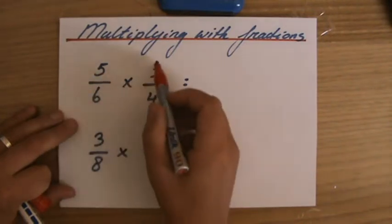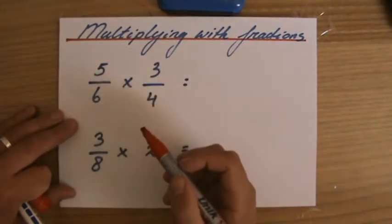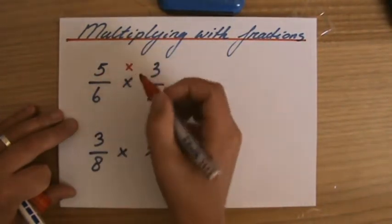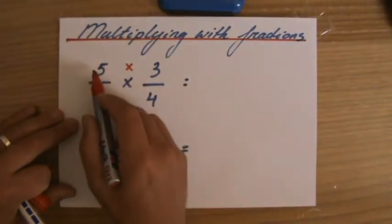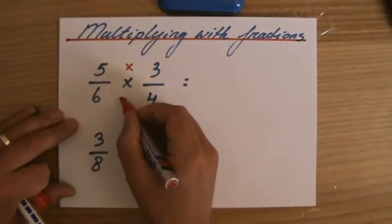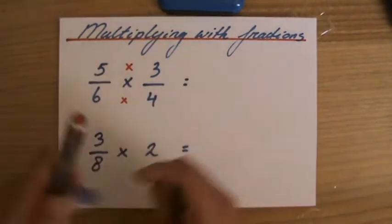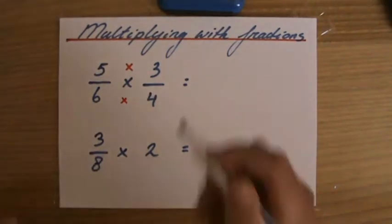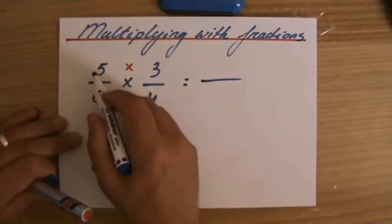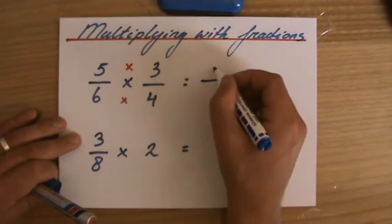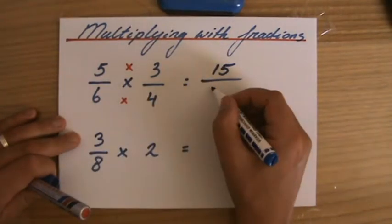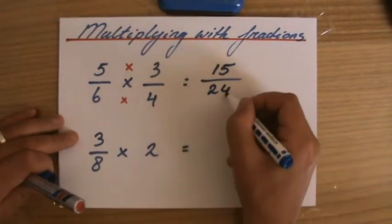5 over 6 times 3 over 4. I simply multiply the numerators with each other and I multiply the denominators with each other. So I do not have to manipulate anything. 5 times 3 is 15 and 6 times 4 is 24.